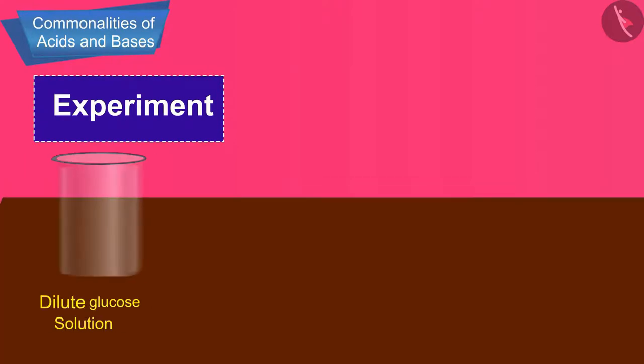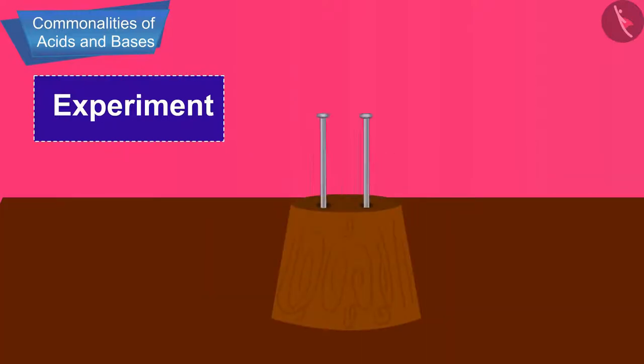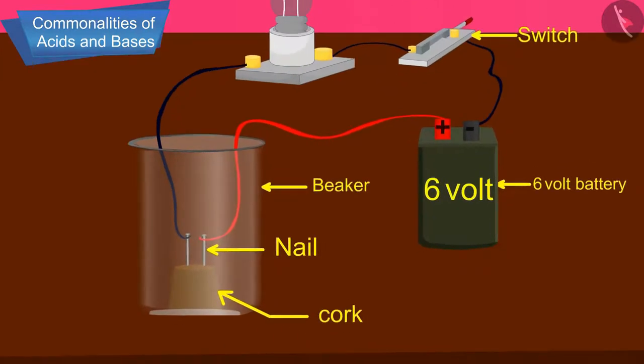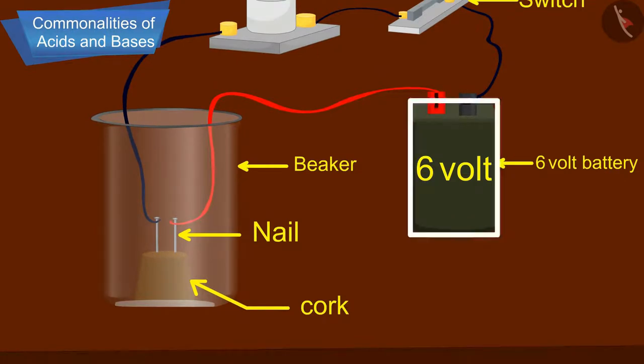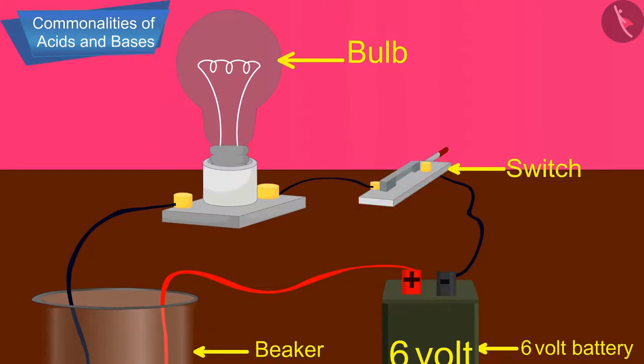Fix two nails on a cork and place the cork in a hundred ml beaker. Connect the nails to the two terminals of a six volt battery through a bulb and a switch as shown in the figure.